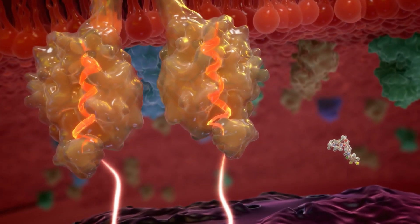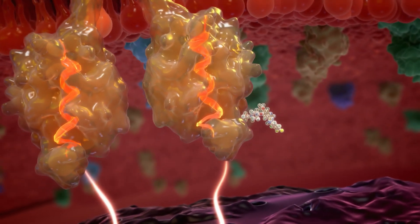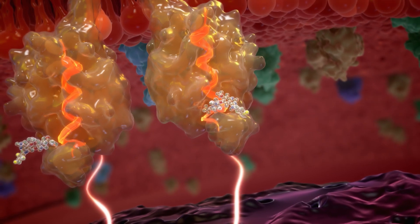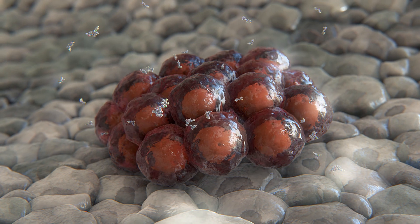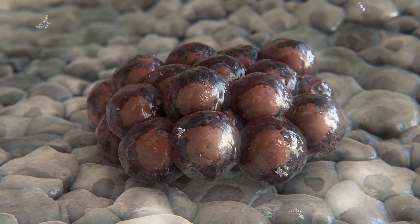In preclinical models of cancer, poseotinib was shown to inhibit kinase activity of EGFR and HER2 with Exon 20 insertion mutations, inhibiting proliferation and promoting cancer cell death.